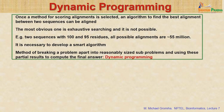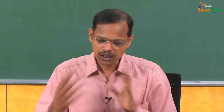The problem is if you have large sequences — for example, if you have 100 residues and 95 residues in two sequences, and if you use all possible alignments you can have about 55 million possibilities. So how to get the best alignment? The most obvious one is exhaustive searching, but that is not possible because of the large number of combinations. So we need to develop a smart algorithm to get this alignment.